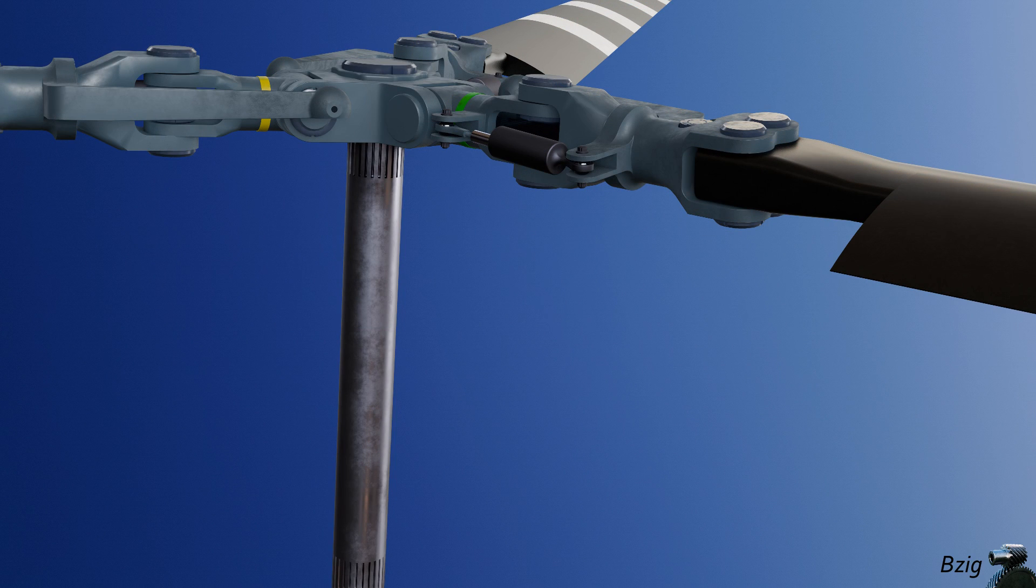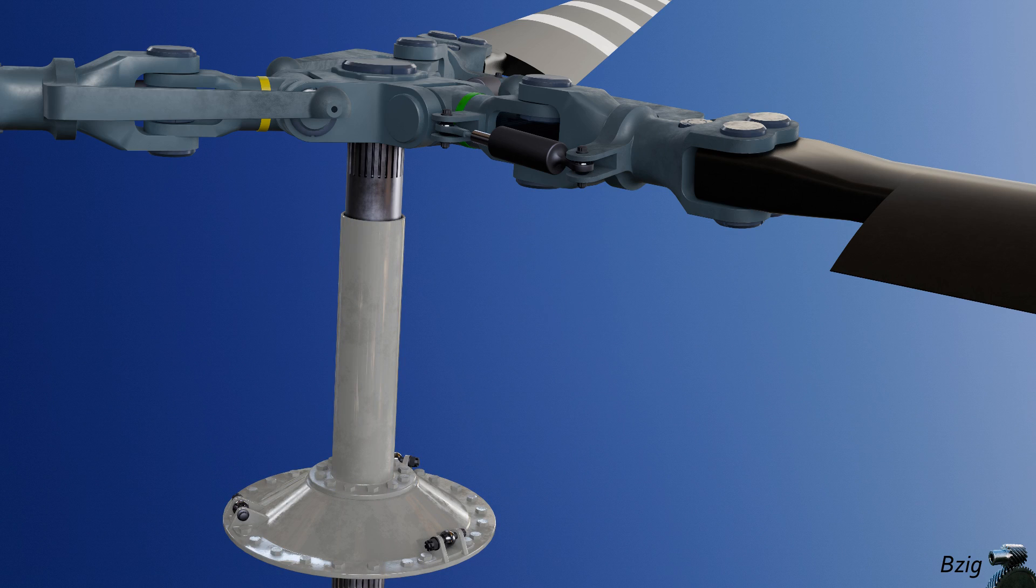Now we'll start showing the non-rotating controls. I'll hide the rotating controls first to make it easier to see. First, we need something to mount the non-rotating controls to, something that doesn't rotate, so we'll add a transmission adapter that'll be bolted to the top of the transmission.